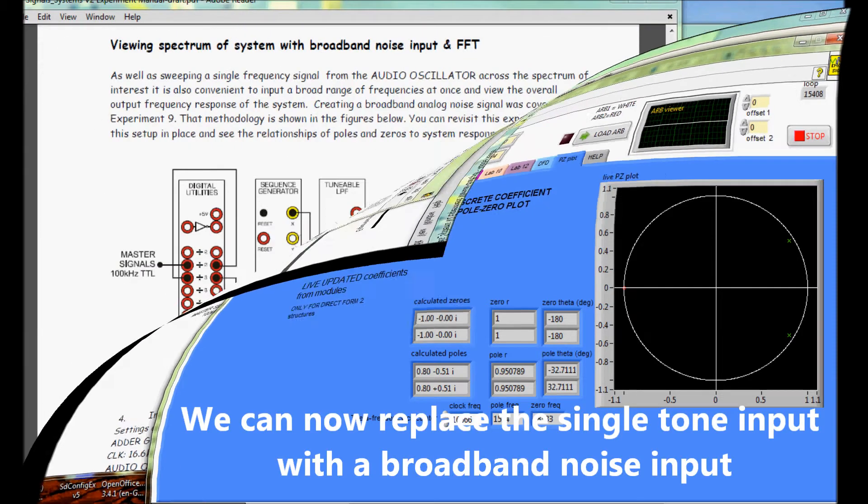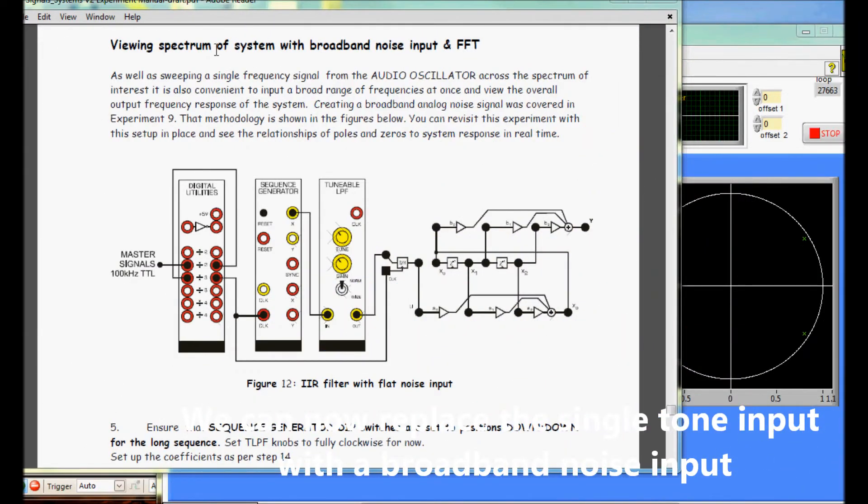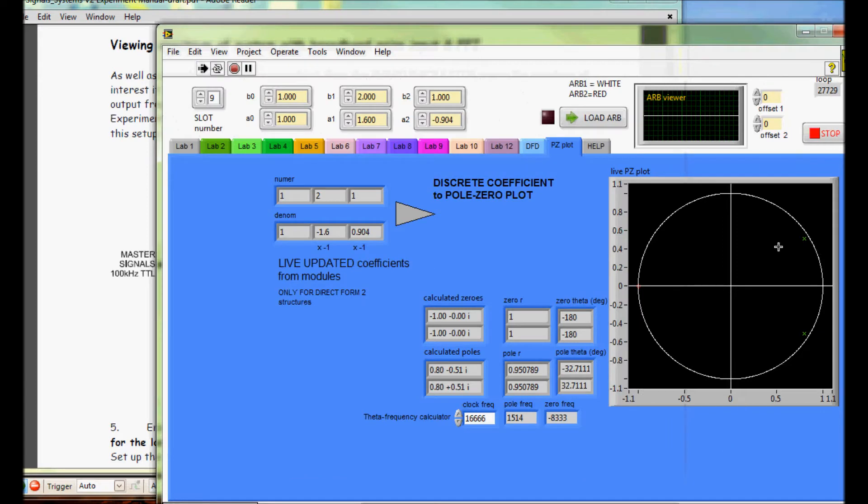Changing the patching of the modules, we can now use a broadband input signal rather than a single tone. Once again, we view the input and output, this time using the spectral capabilities of the scope.